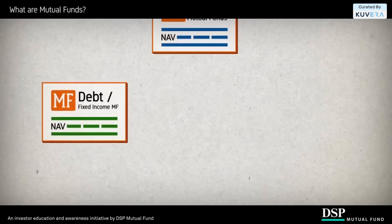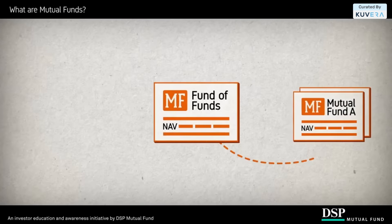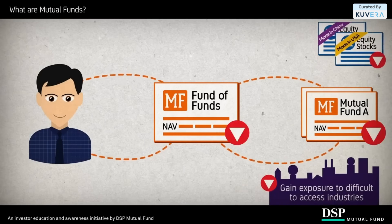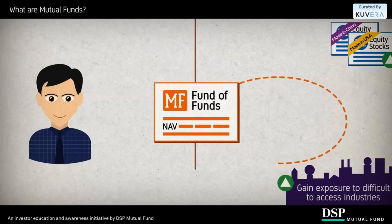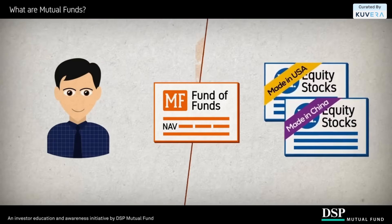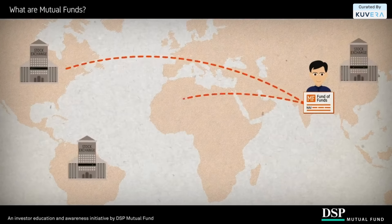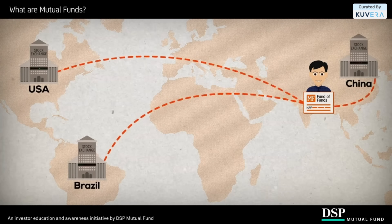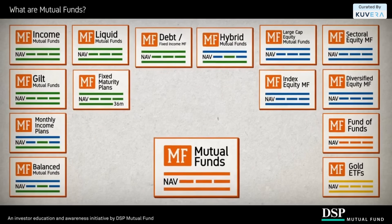Having spoken about debt, equity, and balanced funds, let us talk about fund of funds. These are funds which themselves invest in units of other mutual funds, thereby giving you the benefit of multiple funds in one. These funds can also help you access stocks or industries which may not be easily accessible for you to invest in directly. Some fund of funds also enable you to invest in international stocks or mutual funds. For instance, there are popular fund of funds available in India today that can give you access to stocks from international markets such as the U.S., Brazil, or even China. These funds also enable you to invest in high-potential sectors or industries that may not have much of a presence in India.